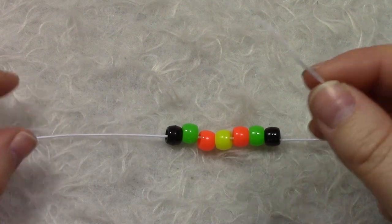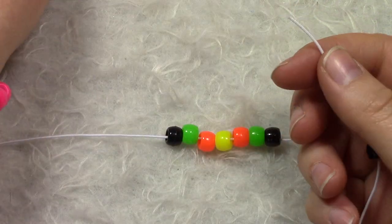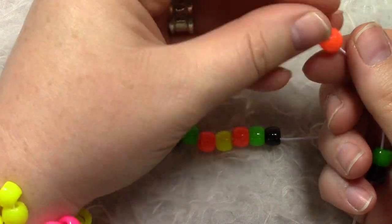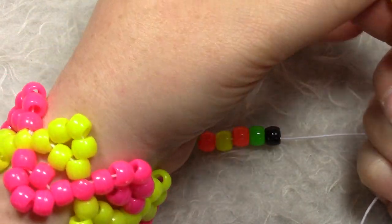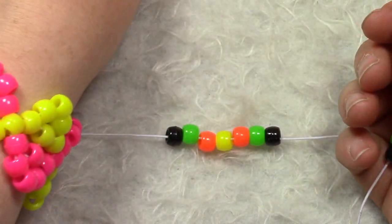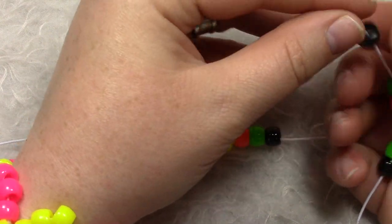So after you have your original seven on there, we are going to add on seven in the same pattern. One thing to keep in mind is if you would like to alternate where one pattern was different on the opposite side, what you would need to do is make sure the pattern on your cuff is going the same direction each time.